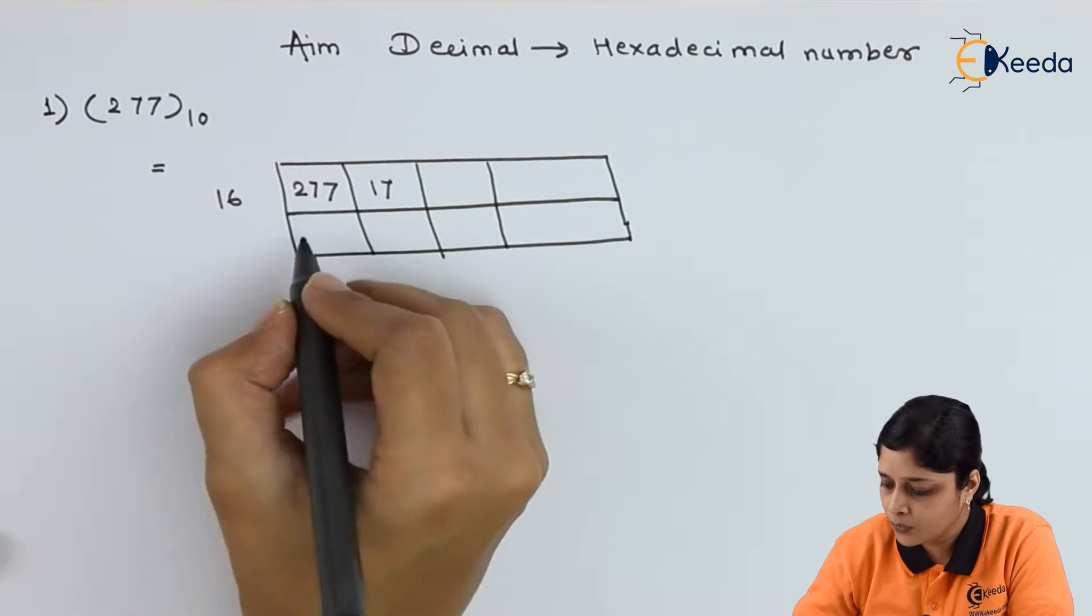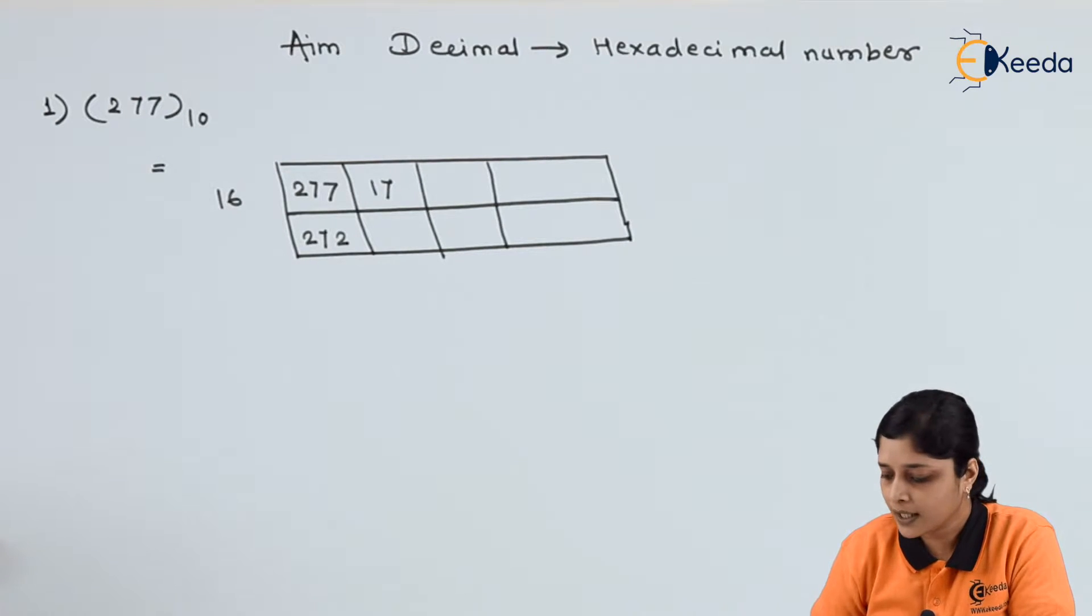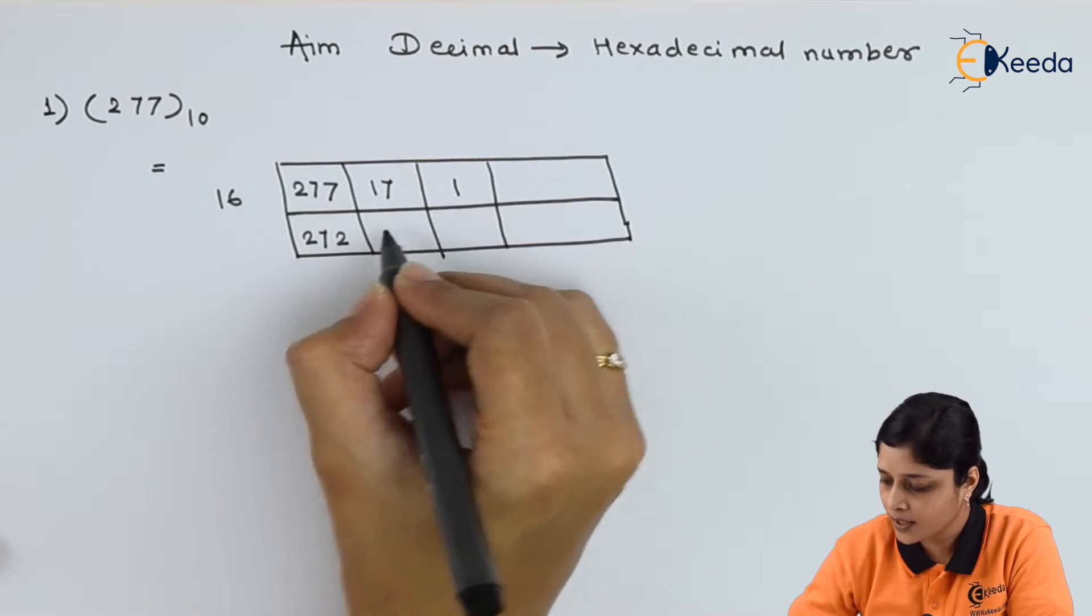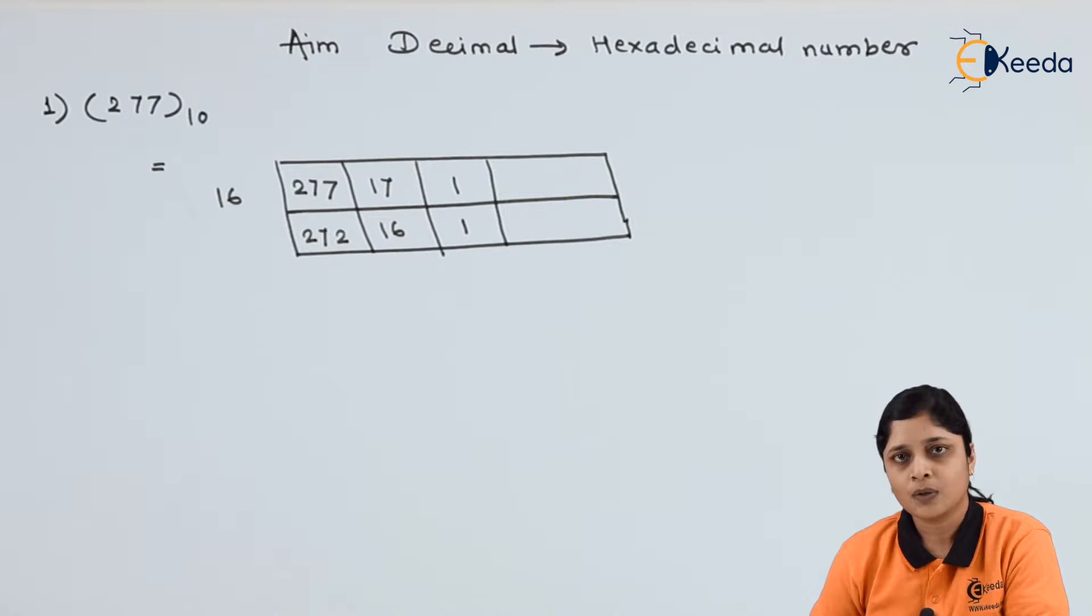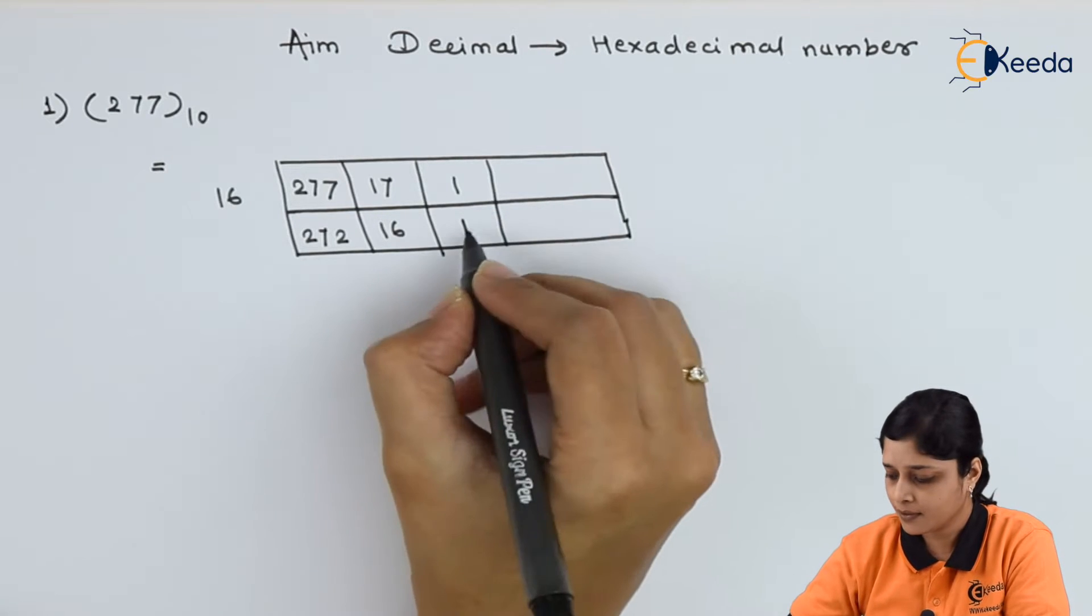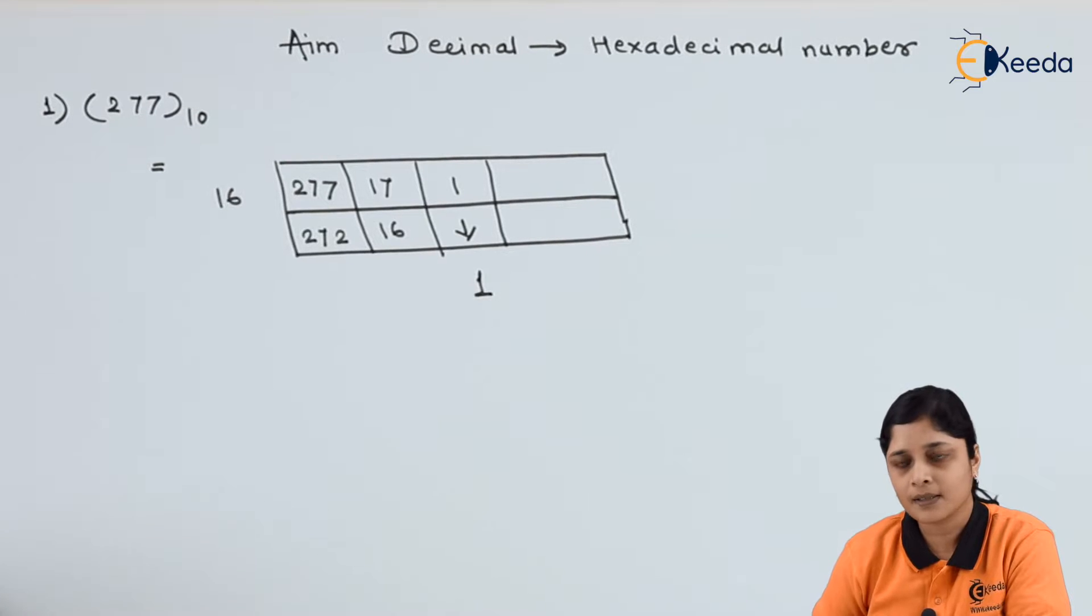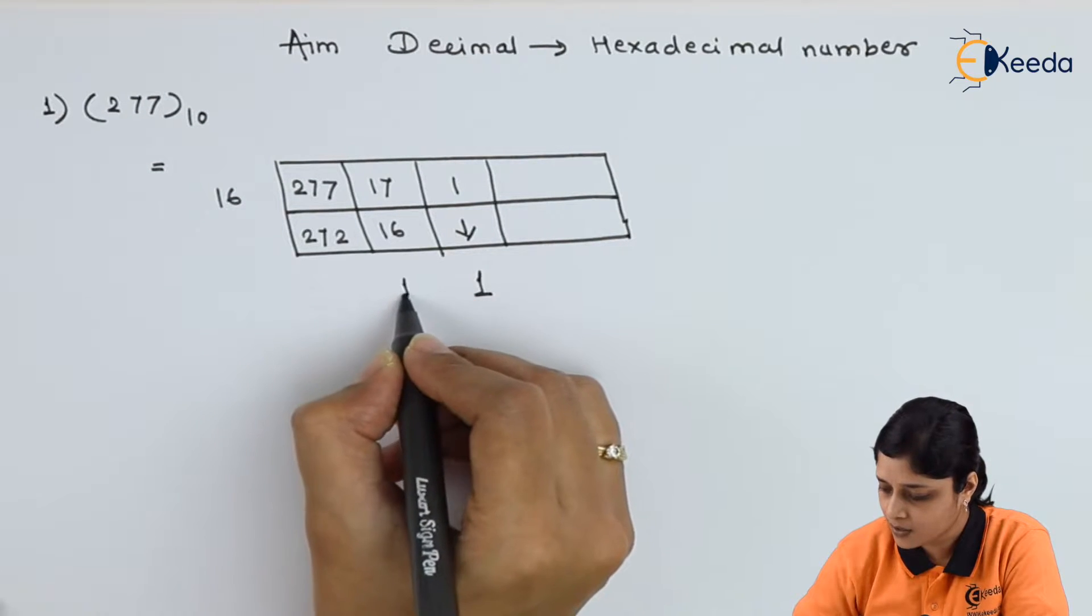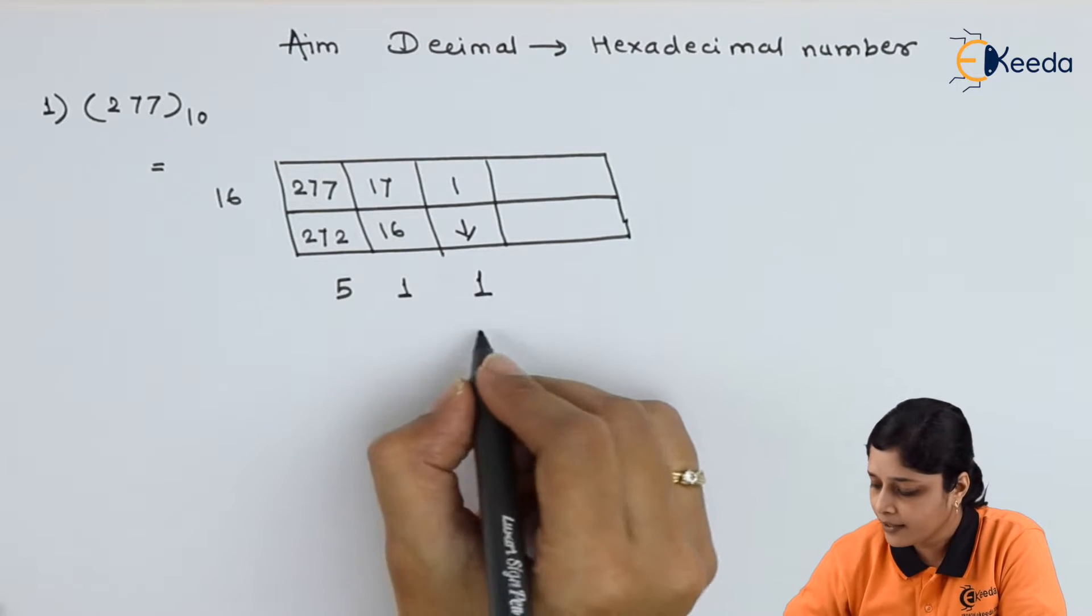Again make a division: 1 into 16 is 16. So finally you will get 1 as is. Here make a subtraction: 17 minus 16 is 1, and here the subtraction is 5.